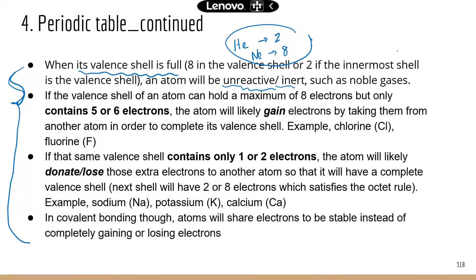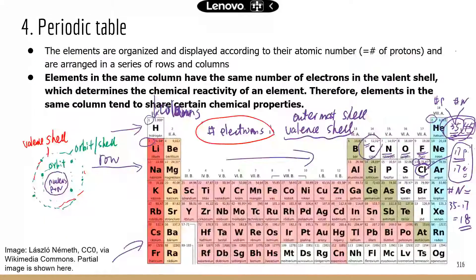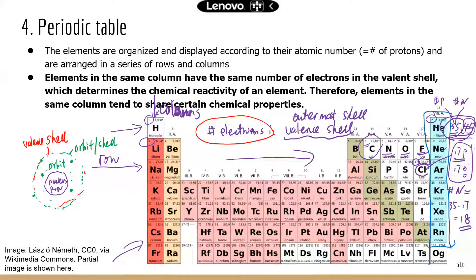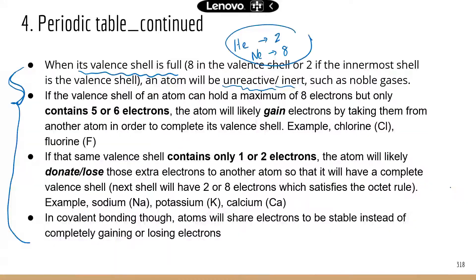So these atoms will be chemically unreactive or inert. In fact, these elements, let me go back here, these elements are known as noble gases. If you look at this column, see helium, neon, argon, all these elements have two or eight electrons in the valence shell. So they are stable. And that's why they're called noble gases because they're very inert. They don't like to react with other elements.